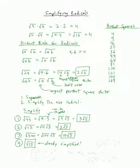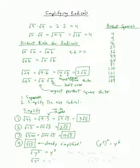What about variables? Throwing variables into the mix makes things a little more challenging, but not too bad. If we take the square root of y to the sixth power, we're looking for something that when squared gives y to the sixth. If I take y cubed and square it, I multiply powers and get y to the sixth. So the square root of y to the sixth is y cubed. Similarly, the square root of y to the fourth is y squared. For any even n, the square root of x to the n is x to the n divided by 2 — just cut the power in half.